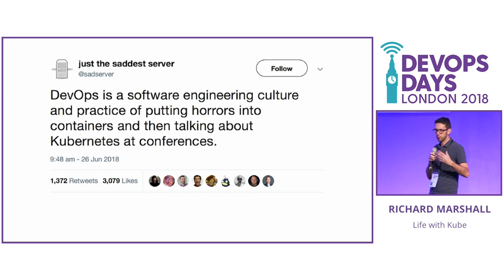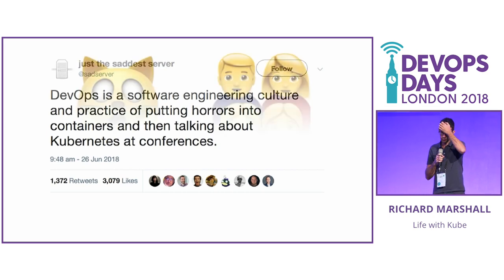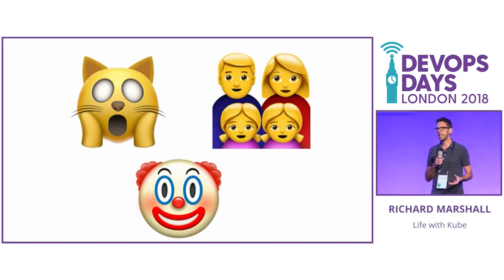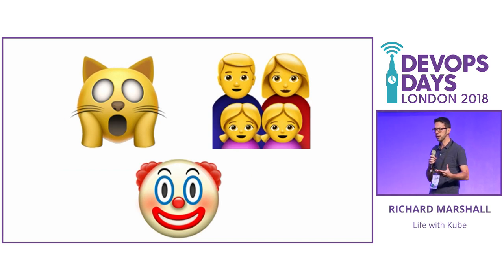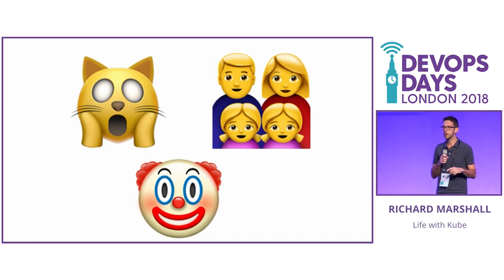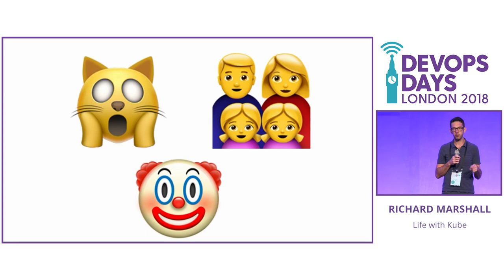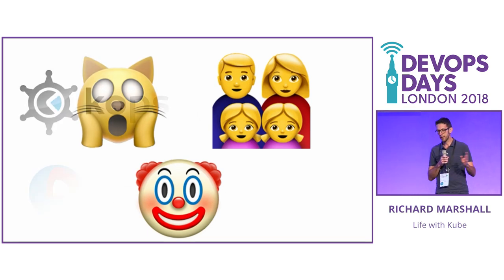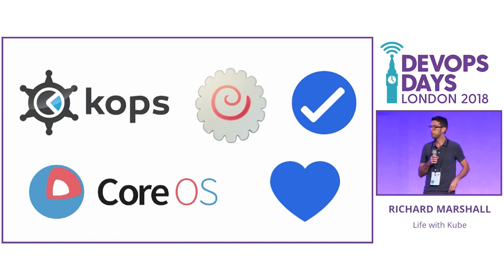When I was writing this and trying to practice for it, I was doing it in front of my kids, and they didn't really understand what I was talking about. I've got three young daughters. I thought if I do it in the form of emoji, maybe that will help. Today I found out if I'd done it with Denise Yu, she'd have just been able to explain all of it. So I live and learn.